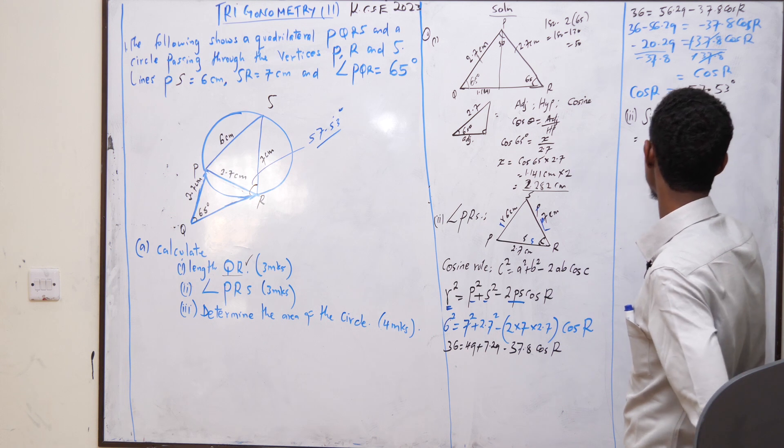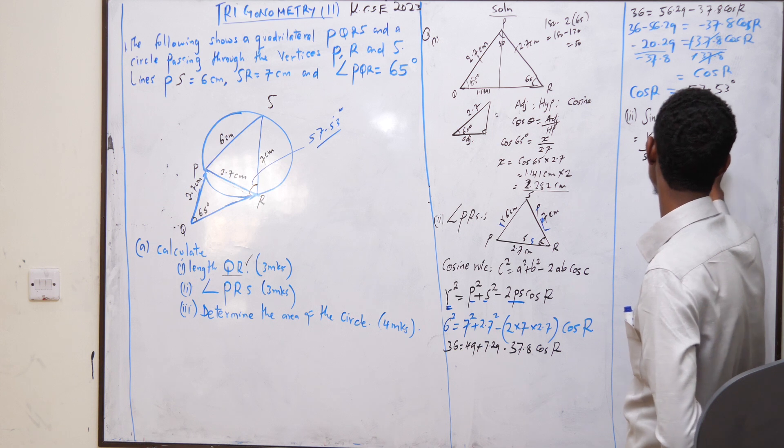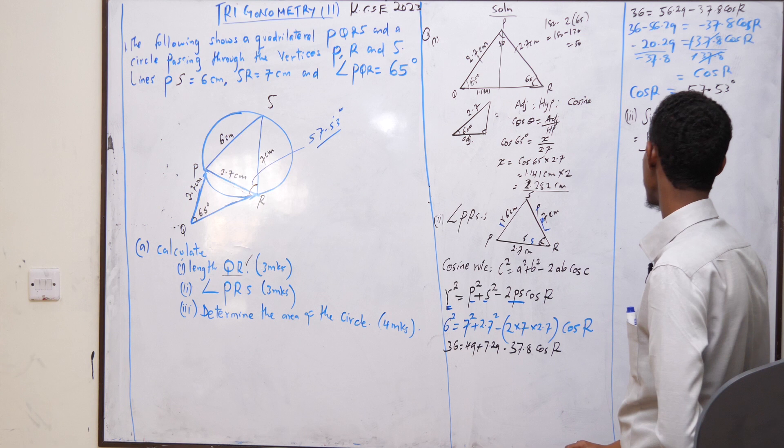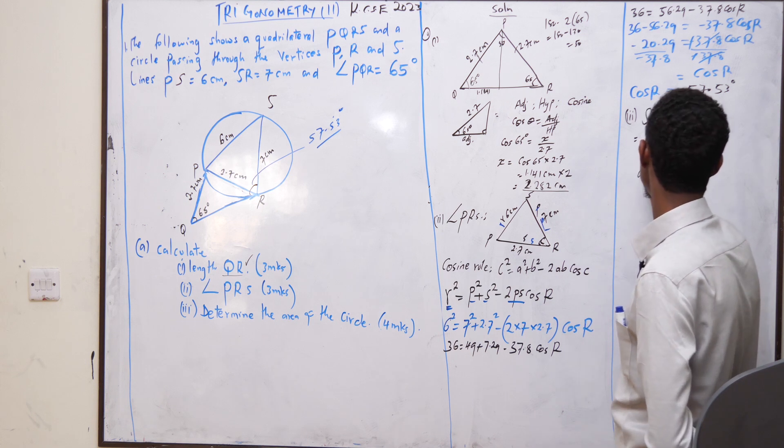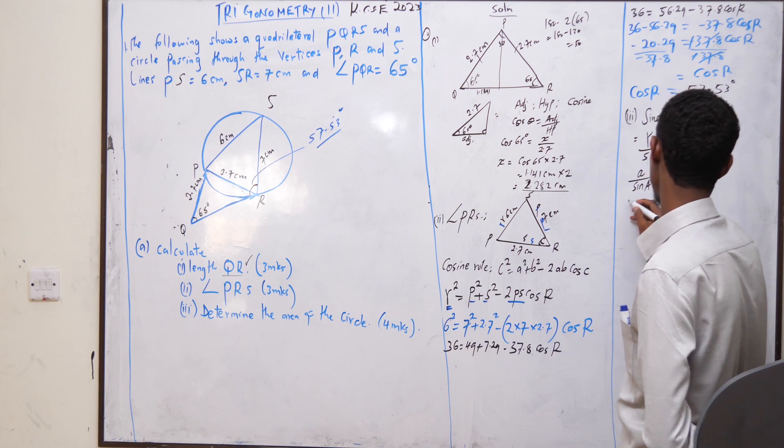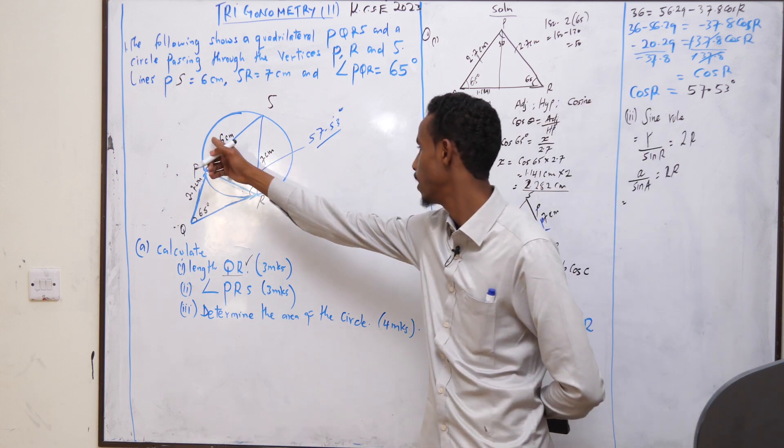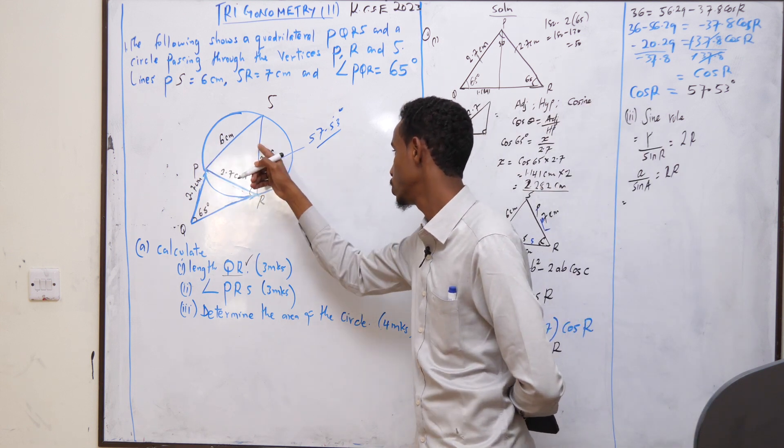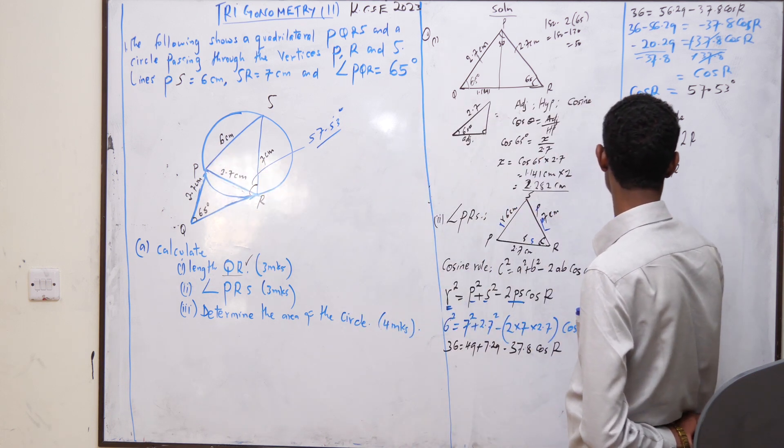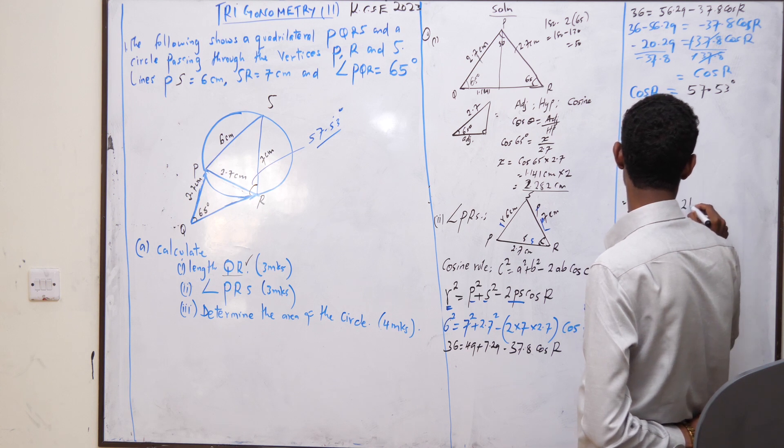You know that R over sine R equals 2R. Or A over sine A equals 2R. Therefore, now that you have 6 here and you also have 57.53, this is the perfect one that you can use. You see, 6 over sine 57.53 equals 2R.